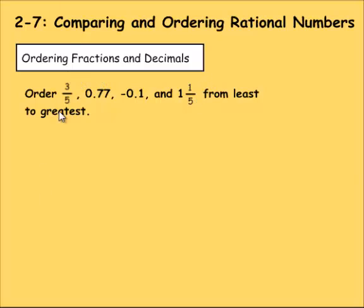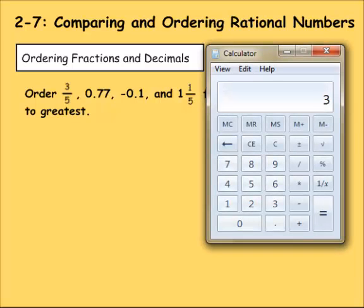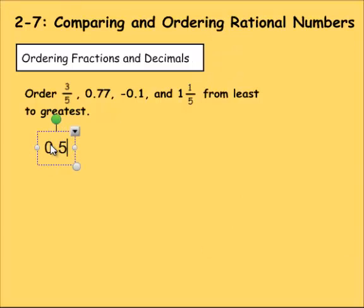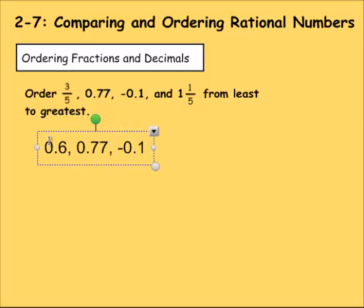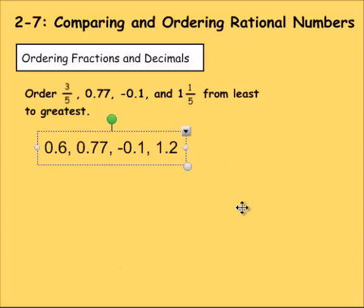I'm going to turn them all into decimals. So 3 divided by 5, if you do that, you're going to get 0.6. All right, so that would be 0.6 for 3/5. So 0.6, you have 0.77, negative 0.1, and then 1 and 1/5. So it would be 1 point what? 1 divided by 5 would be 0.2. So 1.2. All right, so now we have these four numbers: 0.6, 0.77, negative 0.1, and 1.2.